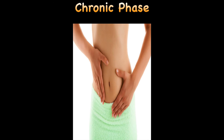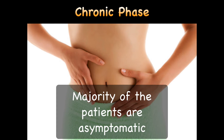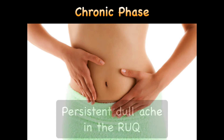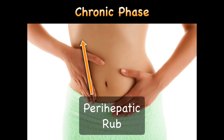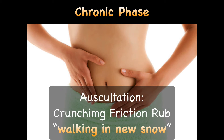In the chronic phase, majority of the patients are asymptomatic, or they may present with persistent dull ache in the right upper quadrant. A diagnostic perihepatic rub may be heard in the right subcostal region. Auscultating at the right anterior subcostal margin may reveal a finding characteristically described as a 'walking in new snow' type of crunching friction rub.